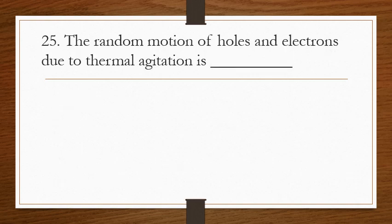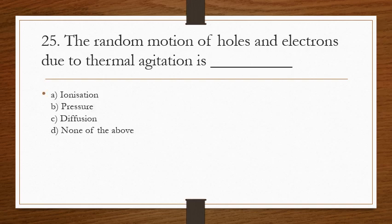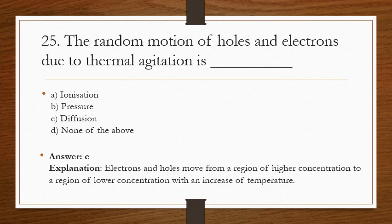Question 25: the random motion of holes and electrons due to thermal agitation is called what? The correct answer is C, diffusion. Electrons and holes move from a region of higher concentration to a region of lower concentration with an increase in temperature.